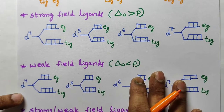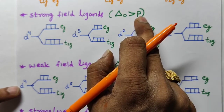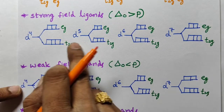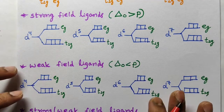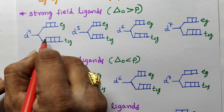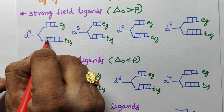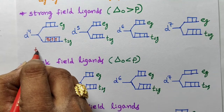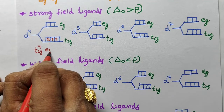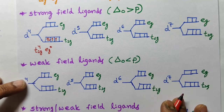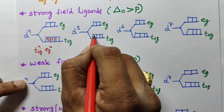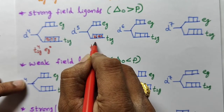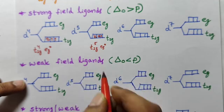Now, strong field ligands — delta O is greater than pairing energy. In presence of strong field ligands, first t2g is completely filled. For d4: four electrons fill into t2g, so t2g⁴ eg⁰. For d5: five electrons fill into t2g, so t2g⁵ eg⁰.